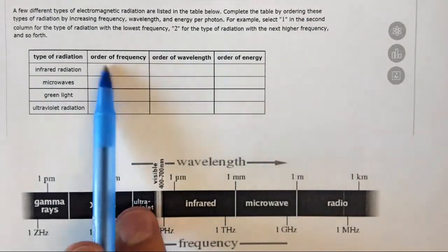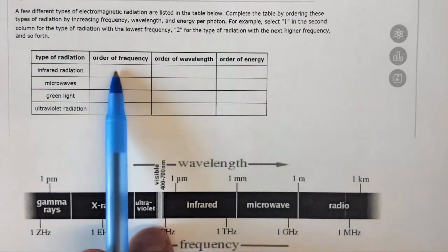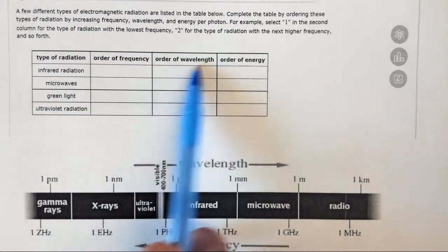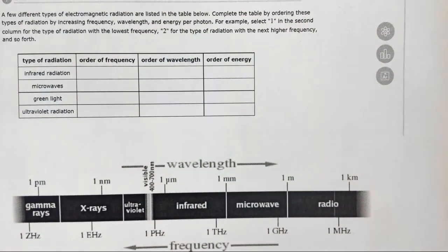So we have three different ways of ordering it and we want to put one in this column for the lowest frequency, one for the lowest wavelength here, and one for the lowest energy here.